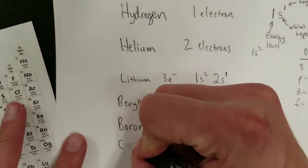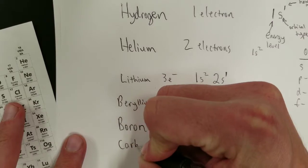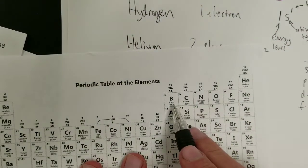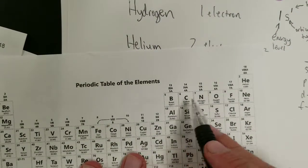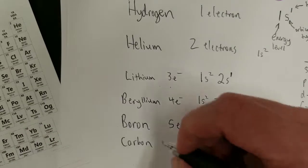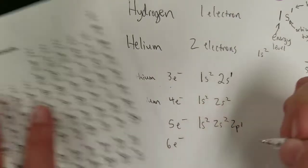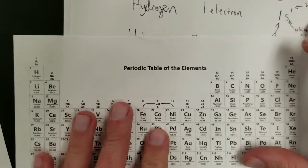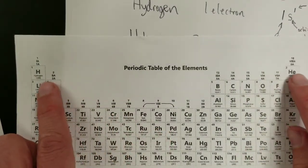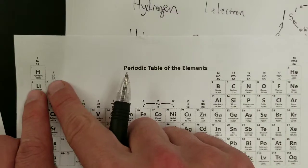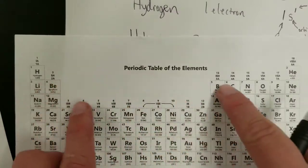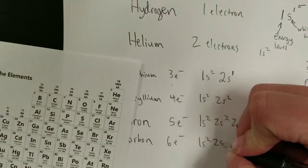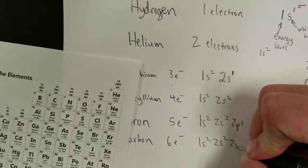For carbon, which has one electron more than boron — six electrons total — we add one electron to boron's config. Carbon's electron configuration is 1s2, 2s2, 2p2.